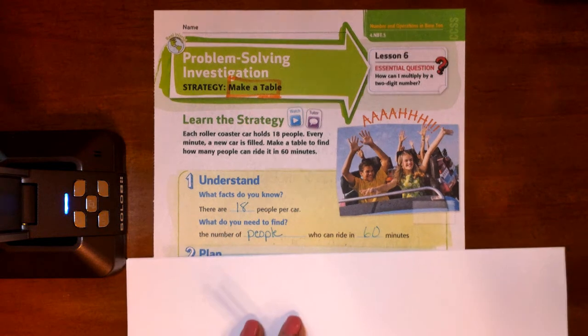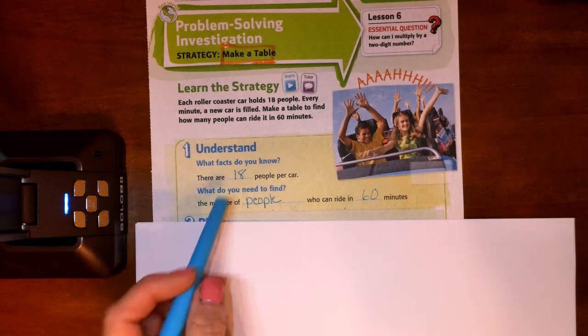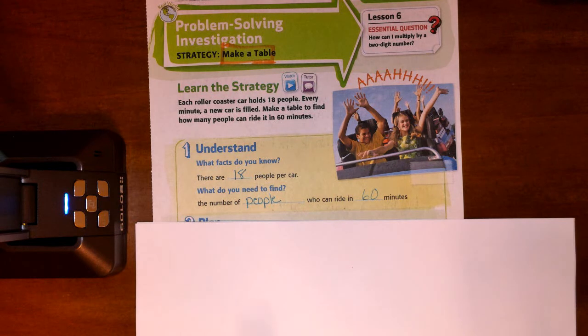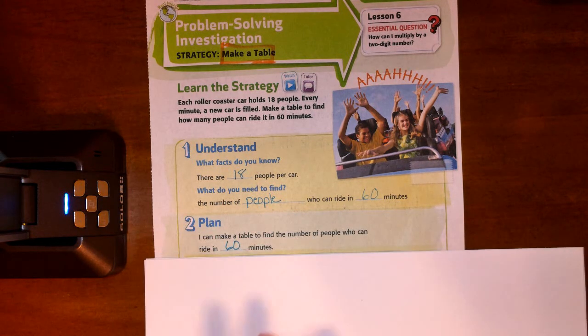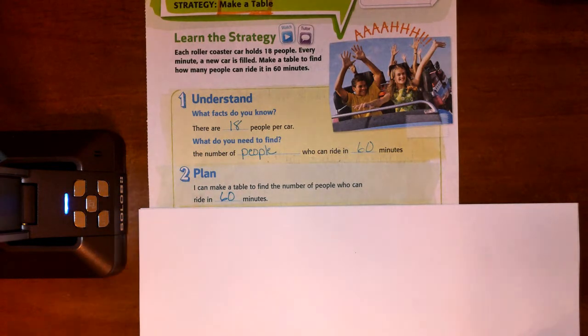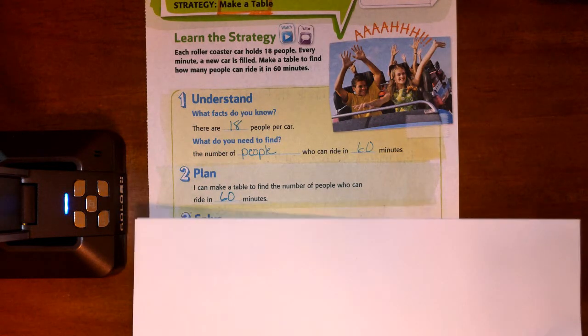So what do we know? We know that 18 people can ride per car. What do we need to find? We need to find the number of people who can ride in 60 minutes. So we're going to plan. We're going to plan to make a table that will show the number of people that can ride in 60 minutes.